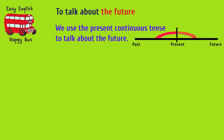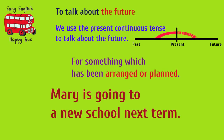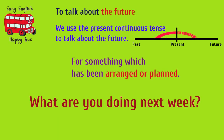We use the Present Continuous Tense to talk about the future — for something which has been arranged or planned. For example: 'Mary is going to a new school next term.' 'What are you doing next week?'